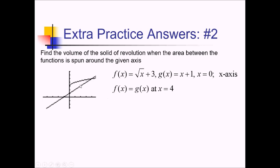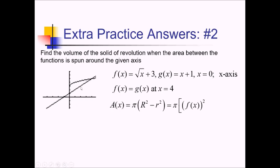I'm going to have my volume being the integral from zero to four of some kind of area function. Since I have this big space between the bounded region and the axis of revolution, I'm going to have to use washers — or donuts, as I like to call them — for my area formula. So A of x equals pi times big R squared minus little r squared, basically a big circle minus a little circle. Big R is the distance from the axis of revolution to the further away boundary, which is this f of x square root function. Little r is the distance to the closer function, which is this linear g of x function.